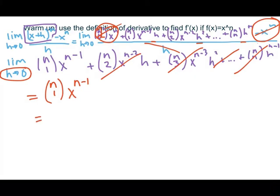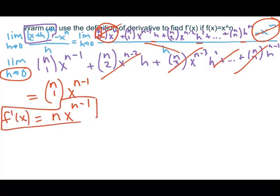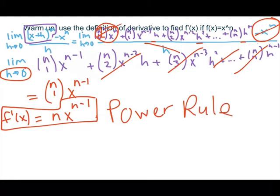Anything choose 1 is itself, so that tells me that f prime of x is equal to n times x to the power of n minus 1. If you took AB last year, this is what we know as the power rule. It's going to make our lives a lot easier when taking derivatives of polynomials.